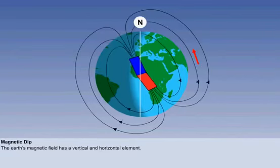As we have seen, a compass indicates the direction of magnetic north, detecting the Earth's magnetic field. The Earth's magnetic field has a vertical element as well as a horizontal element, as depicted in the diagram.